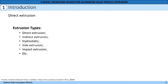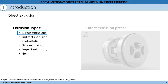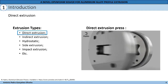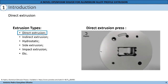There are different types of extrusion process like direct extrusion, indirect, hydrostatic, side impact and much more. We will focus on direct extrusion because it is the method that the company which motivated this work uses and is the most common in the world. Here there is a video of the direct extrusion process.